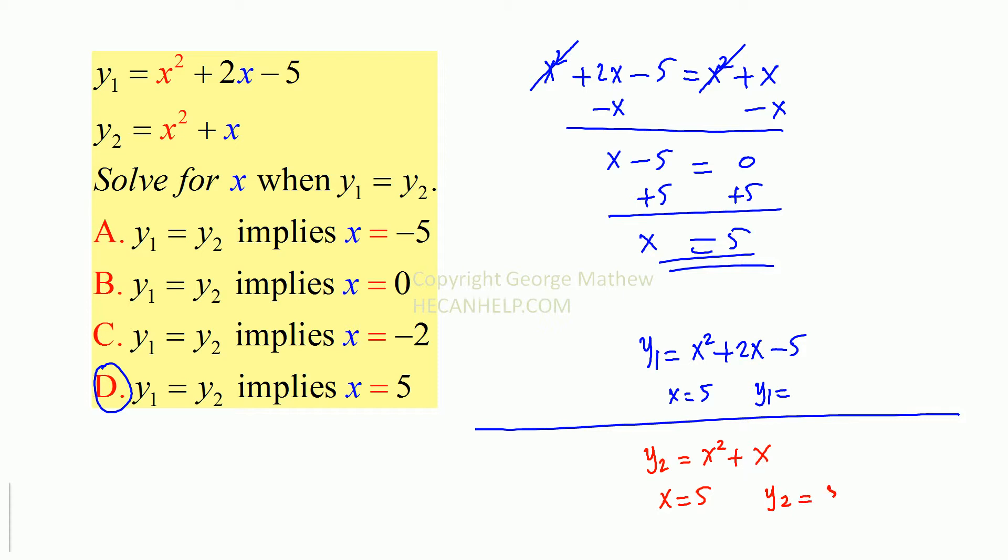y2 is 5 squared plus 5, which is 25 plus 5, and that is 30. When x is equal to 5, what happens to x squared plus 2x minus 5? It will be 5 squared plus 2 times 5 minus 5, and that is 25 plus 10, 35 minus 5, and that is 30.